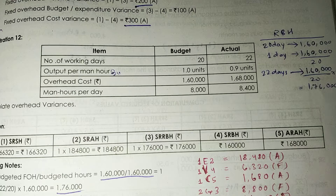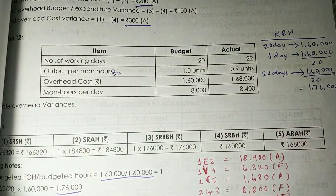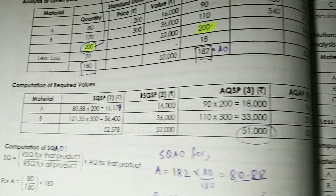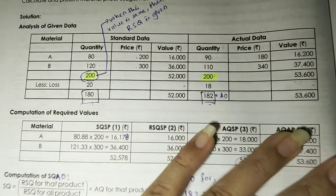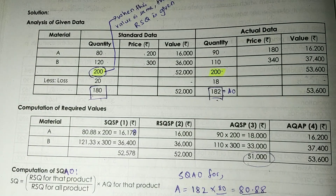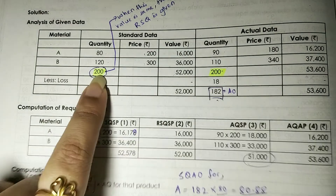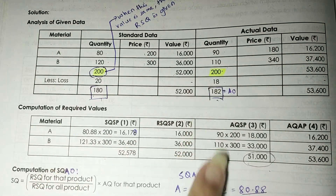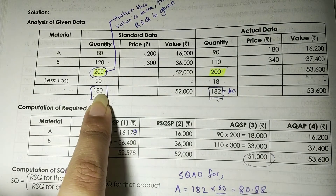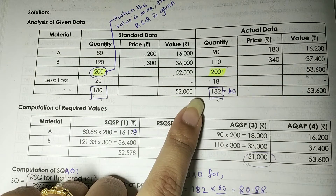The question arises: in this question, Revised Budgeted Hours (RBH) has to be calculated. But first, let's revisit the concept. The very first thing we check is whether the standard input and actual input are the same or not, and whether the standard output and actual output are the same or not.